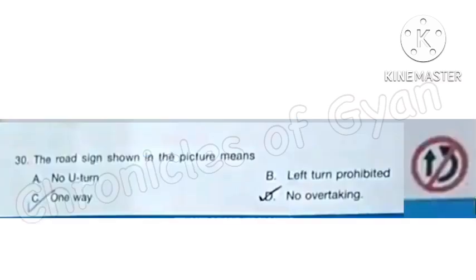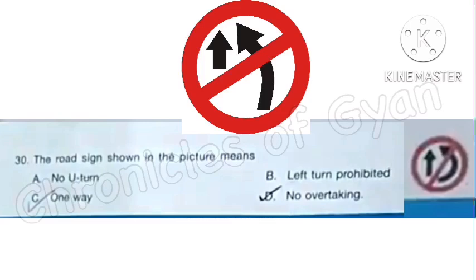Question 30: The road sign shown in the picture means. So this road sign means option D: No overtaking.